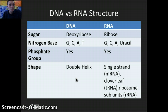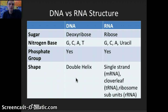Both DNA and RNA have a phosphate group, but their shapes are different. DNA is a double helix. RNA has a couple of different types of shapes: messenger RNA, or mRNA, has a single strand; tRNA has a cloverleaf shape; and there's also rRNA, or ribosomal RNA, which makes up the different subunits of the ribosome.